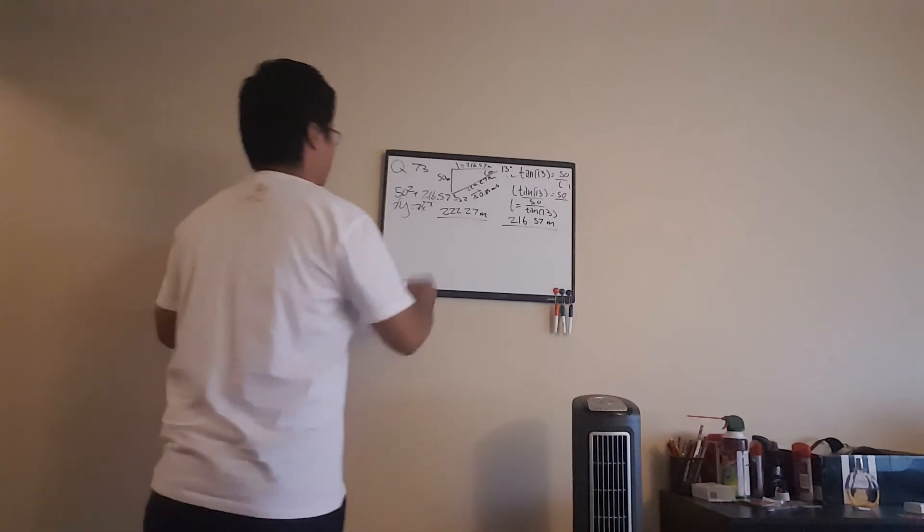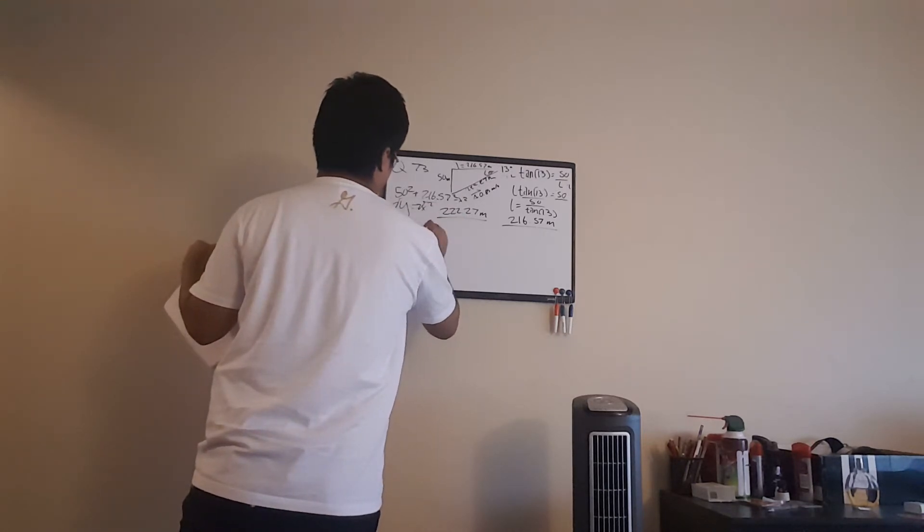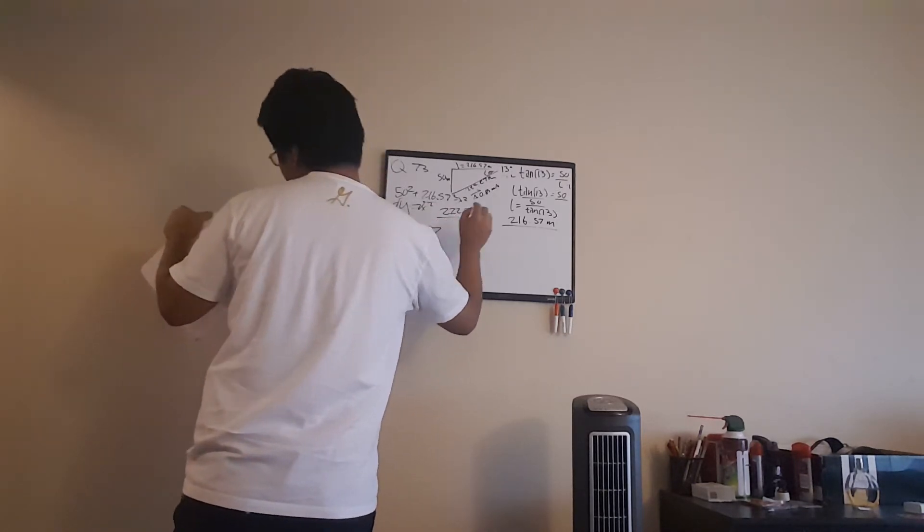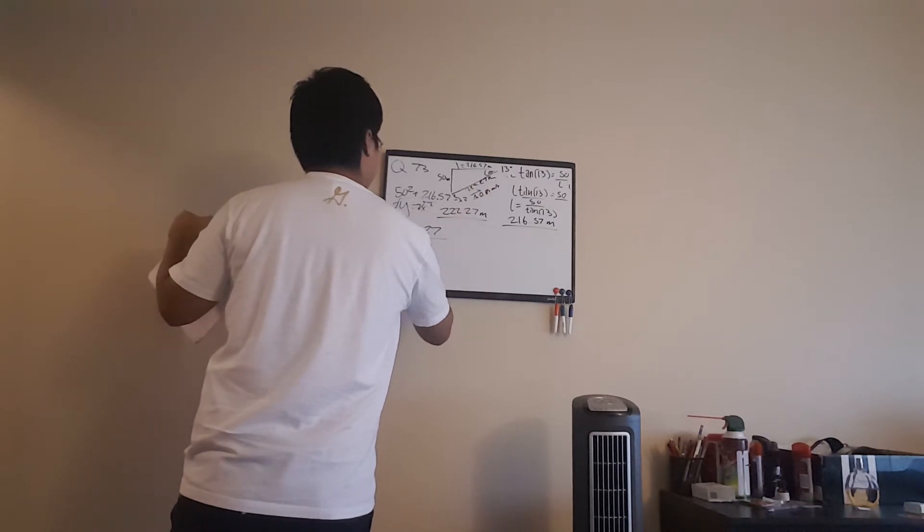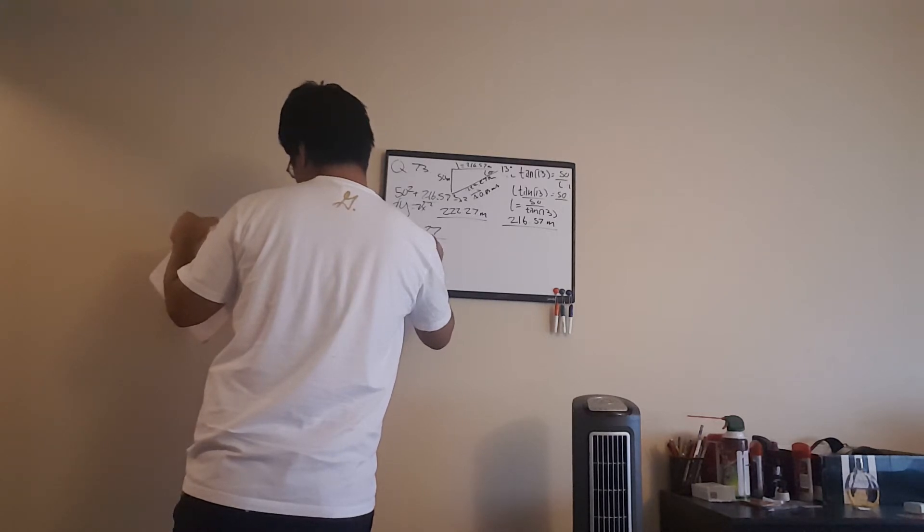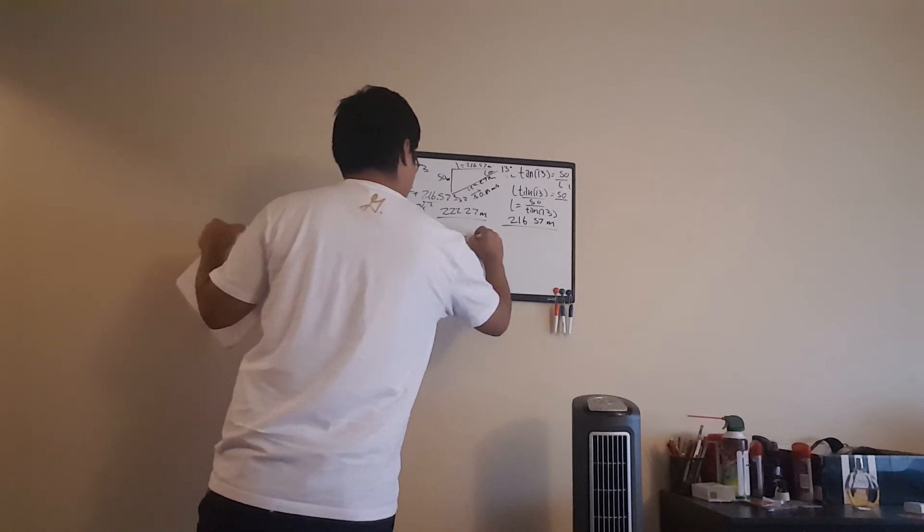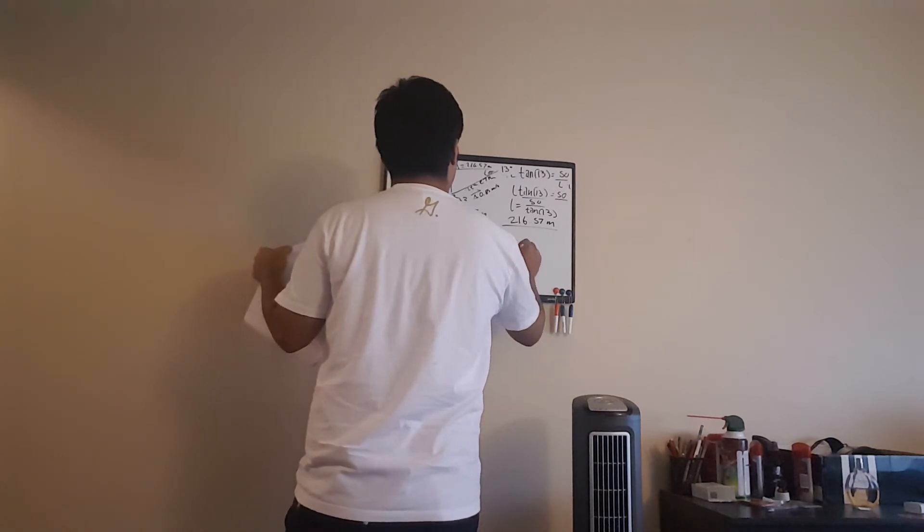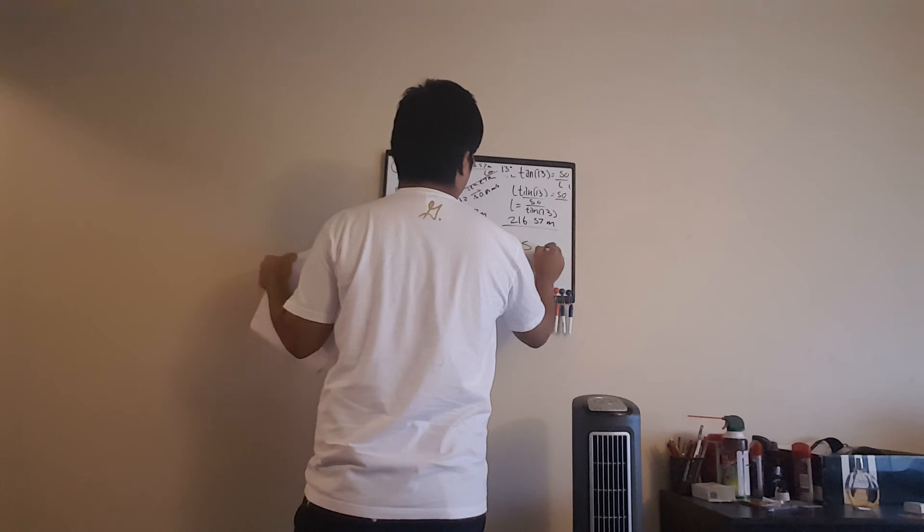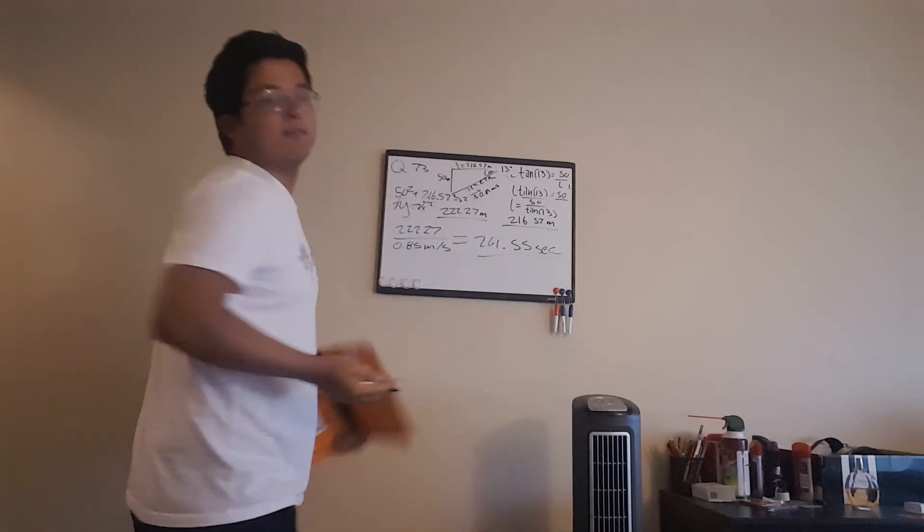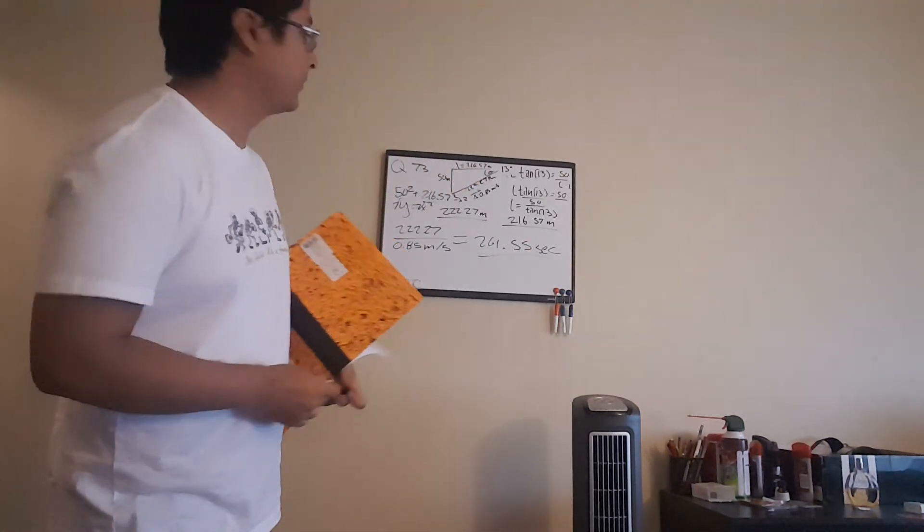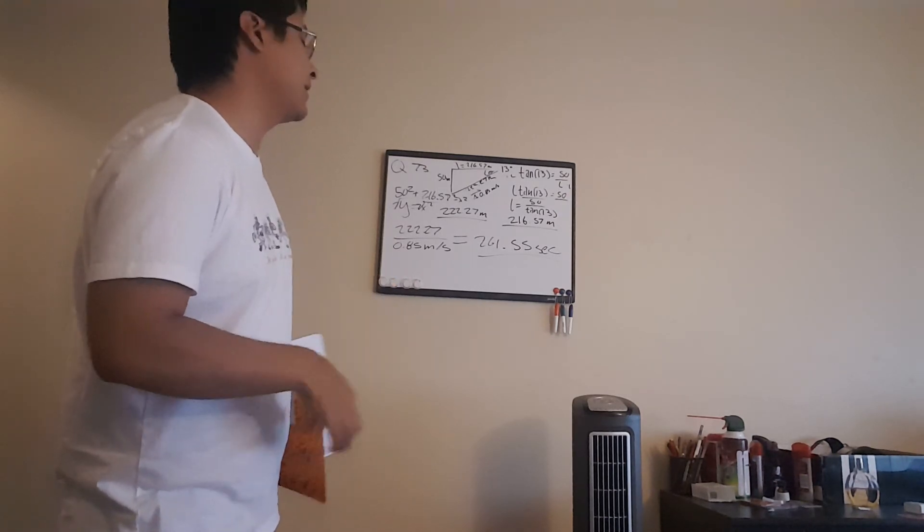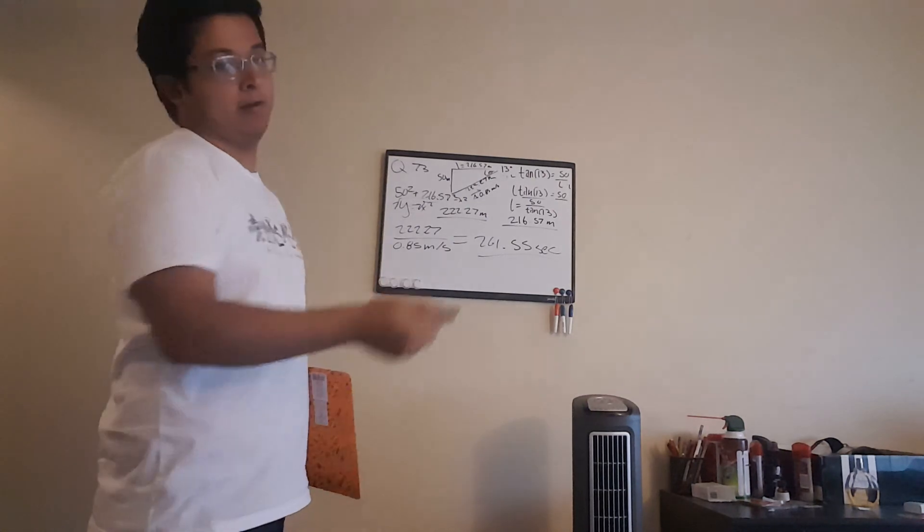So all we do with that is we take 222.27, divide that by 0.85 meters per second, and that will get us 261.5 seconds. That will be like 4 minutes and a half roughly. Yeah, that's how long it took for the shark to actually go up that incline.